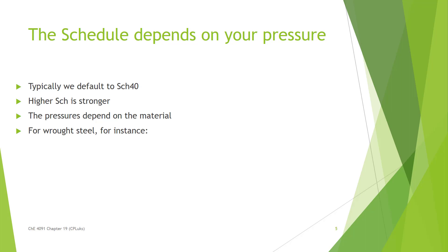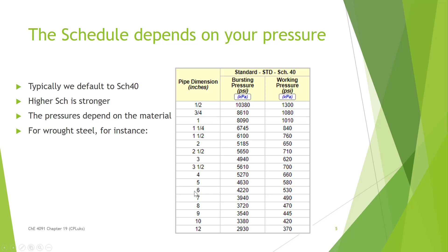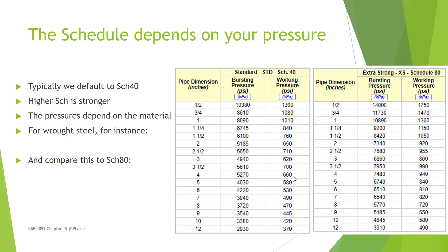For instance, on wrought steel four inch pipe, the bursting pressure is 5,270 psi and the working pressure — the one you should focus on for design — is 660 psi. Comparing this to schedule 80 at four inch, you can go up to a working pressure of 940 psi instead of 660 psi, which is a fairly significant increase. You always want to make sure you are selecting the schedule and diameter appropriate for the pressure you expect.